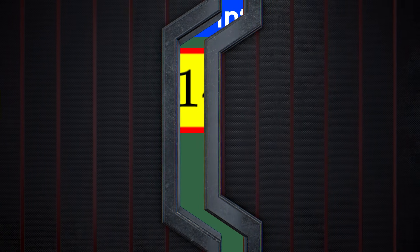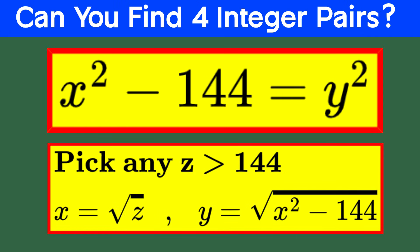Now, if we could just pick any real numbers, this would be a breeze. You'd simply grab a number z greater than 144, declare it as x squared, and boom, you find that x is square root of z and y is the square root of z minus 144. Easy peasy.